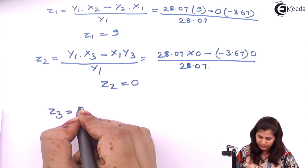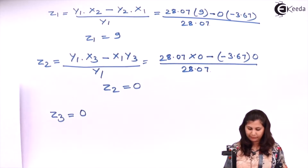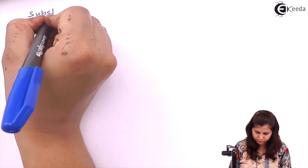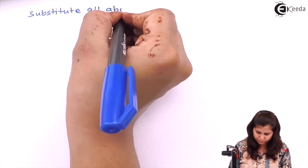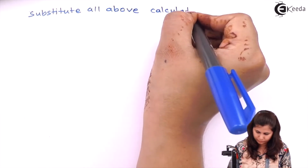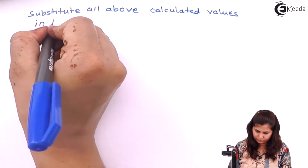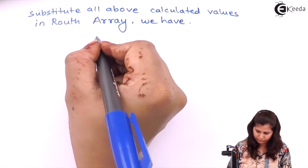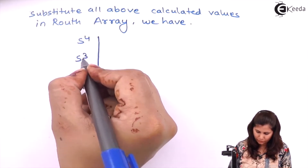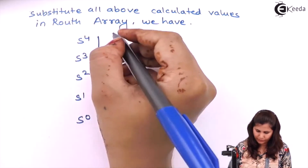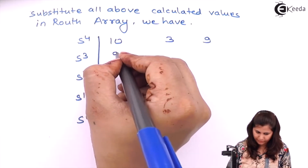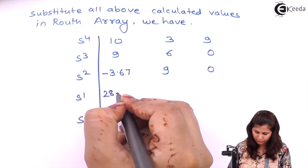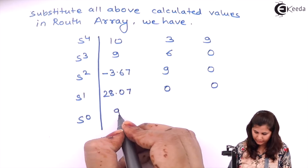z3 is also 0. We have now calculated all elements of the Routh Array. The complete array is: s⁴: 10, 3, 9 — s³: 9, 6, 0 — s²: −3.67, 9, 0 — s¹: 28.07, 0, 0 — s⁰: 9, 0, 0.